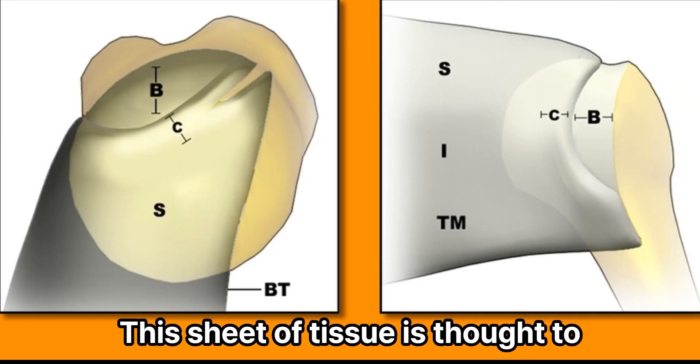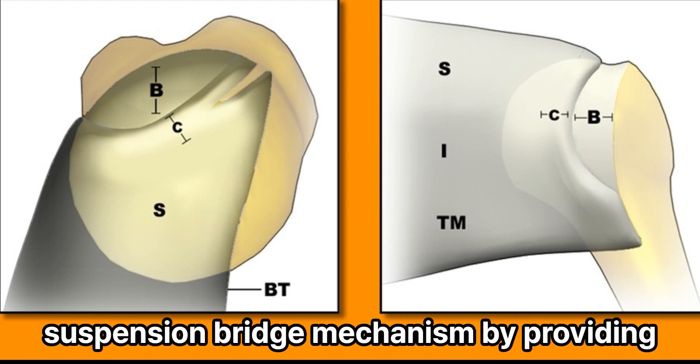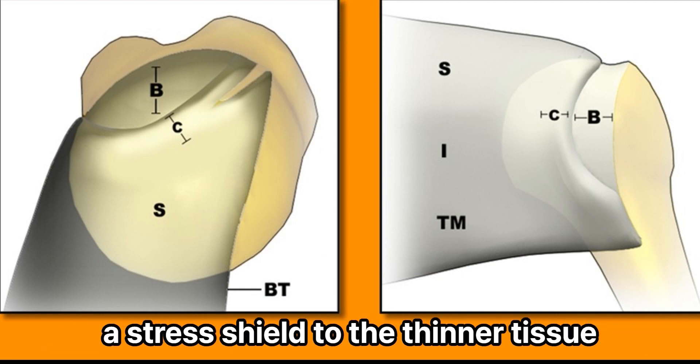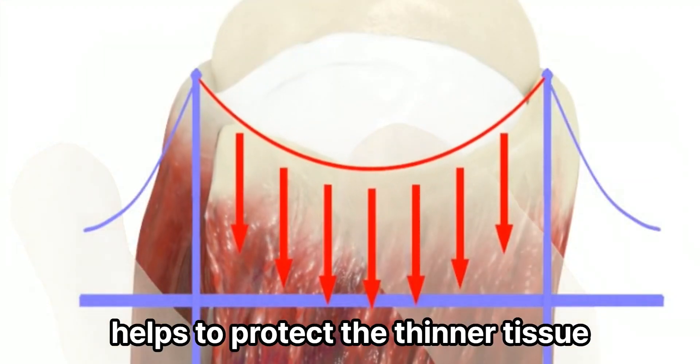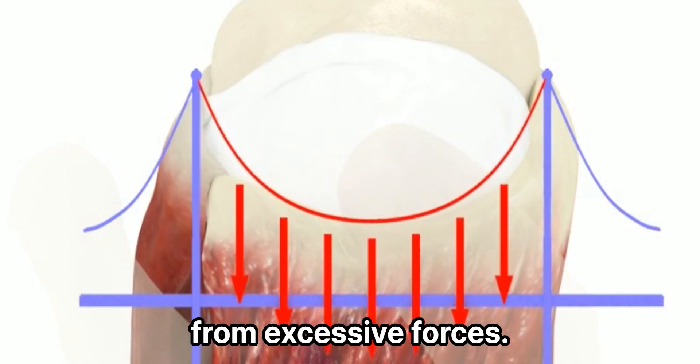This sheet of tissue is thought to play an important role in the suspension bridge mechanism by providing a stress shield to the thinner tissue within the crescent. This means that the rotator crescent helps to protect the thinner tissue from excessive forces.